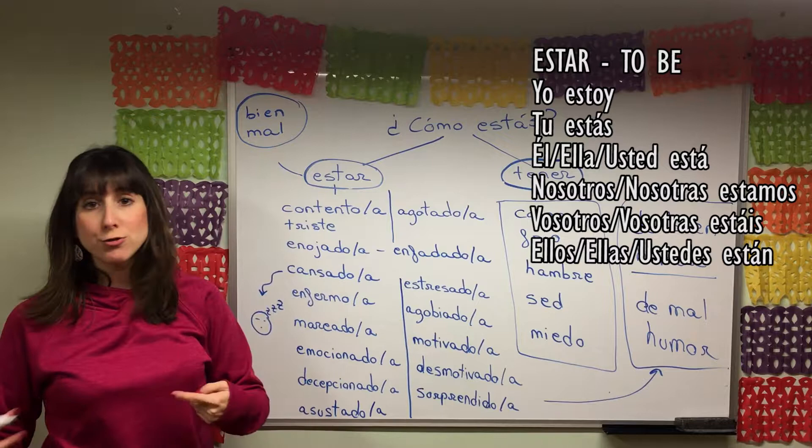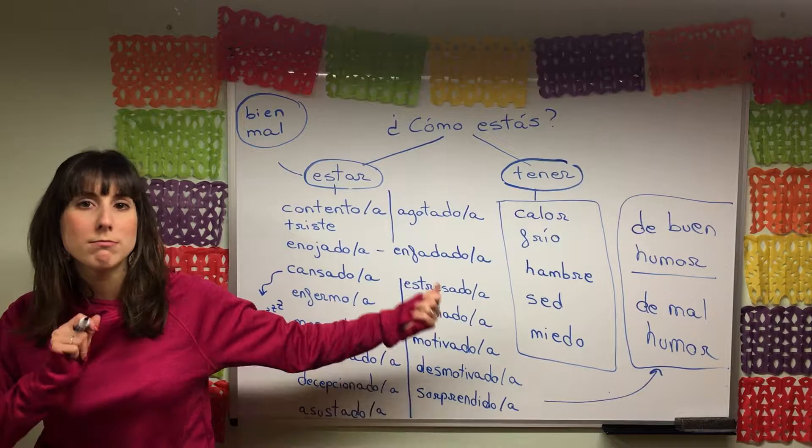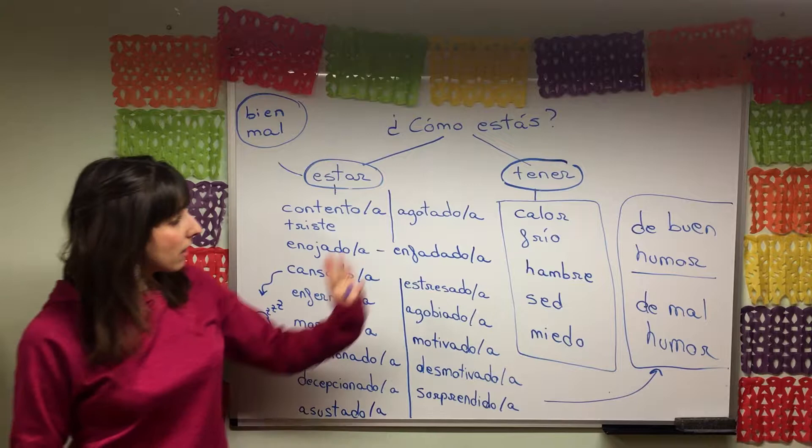But today let's just remember that estar is used when we want to say how we're feeling at a specific moment in time. So we want to say things like I'm tired, I'm happy, I'm disappointed, I'm excited, I'm angry — all of those are going to go with estar.